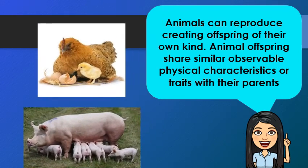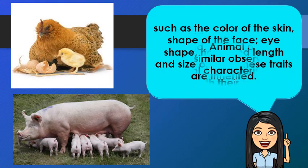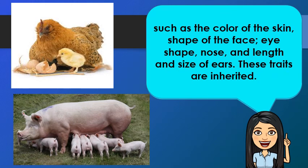Animals can reproduce, creating offspring of their own kind. Animal offspring share similar observable physical characteristics or traits with their parents. Traits are characteristics that can be observed in a living thing. When living things reproduce, they pass on traits to their offspring, such as the color of the skin, shape of the face, eye shape, nose, and length and size of ears. These traits are inherited from their parents.